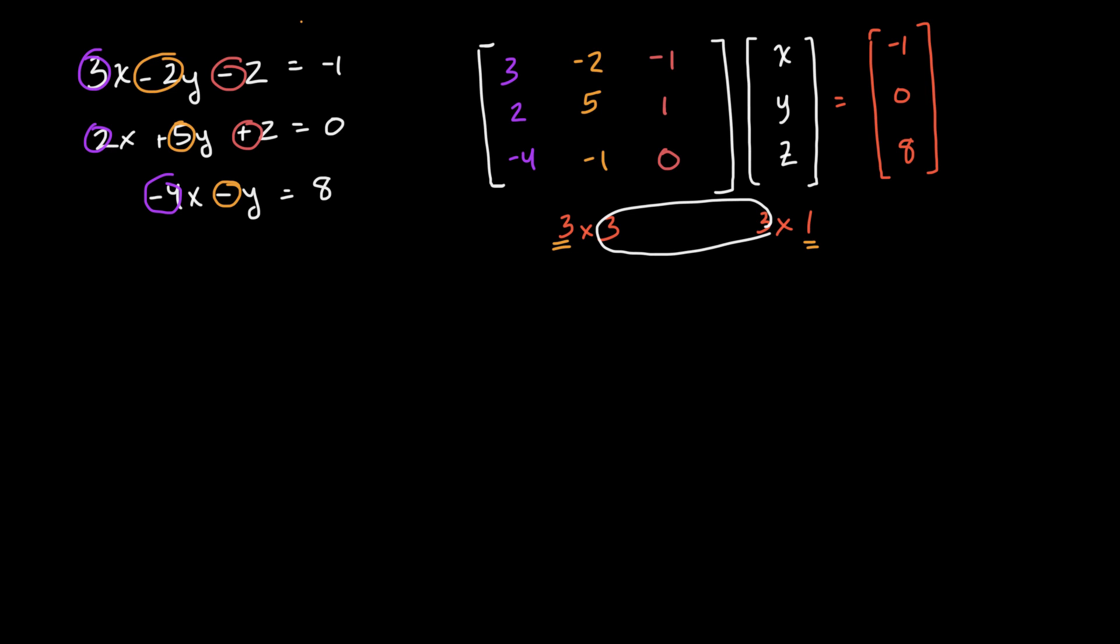But let's actually multiply things out. Well, we know one way to construct this, so I'm just going to focus on the left-hand side here, is to say, all right, let's essentially take this row and this column, and then take the sum of the product of the corresponding terms.